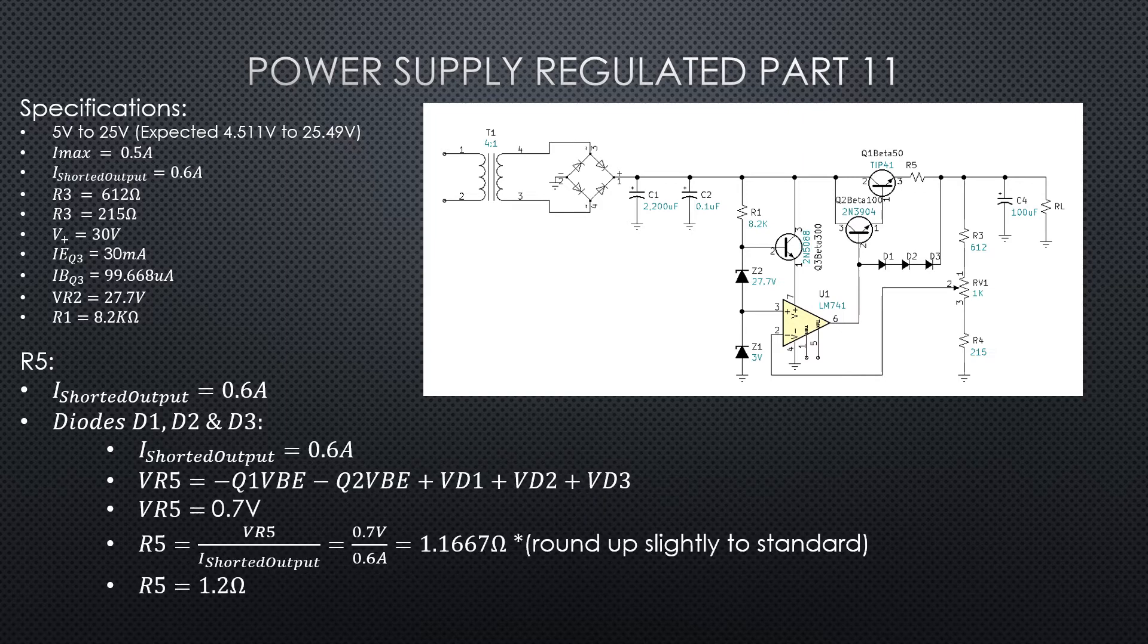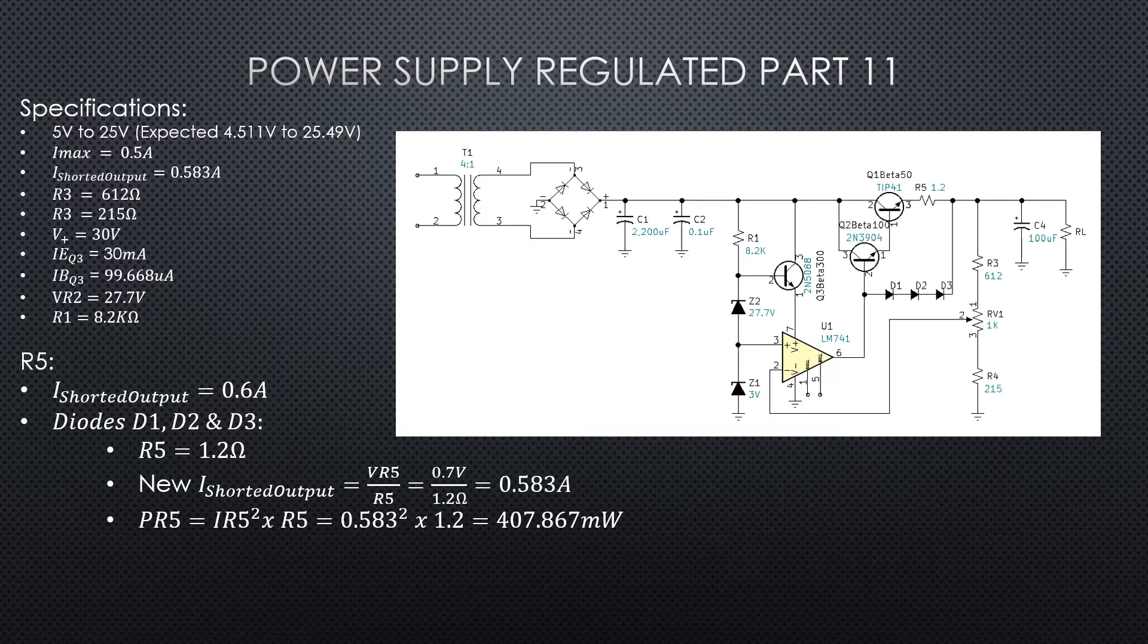So now that we understand how the circuit is working, the current limiting circuit is working, we can go ahead. We know that VR5 is going to be equal to 0.7 volts when the limiting kicks on, and then it'll be held at that voltage by the diode branch. Once we've got that voltage, we pick our I shorted output where we want to limit at, and we divide that voltage by that current, and that gives us a resistance R5 of 1.1667 ohms. Now you can round that up slightly. What that's going to do is bring your current down a little bit. You could round it down slightly and that would bring your current up a little bit. For this example we're going to round down to 1.2 ohms.